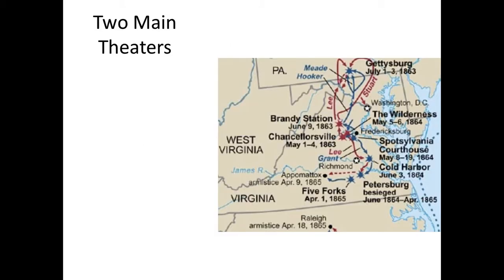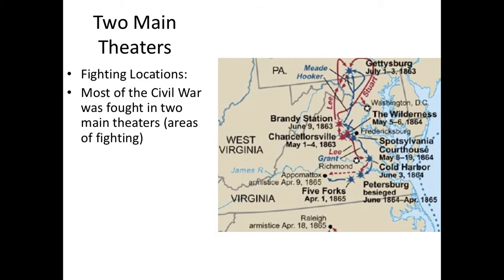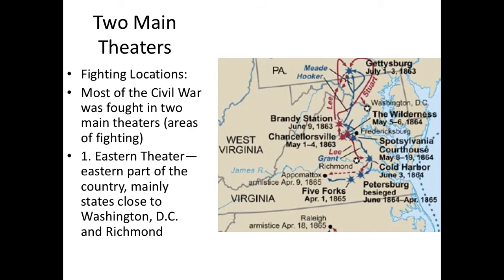First, let's talk about the two areas of fighting involved in this lecture. Most of the Civil War is going to be fought in two main theaters — a theater being basically an area in which many battles are taking place. The Civil War is mostly fought in either the Eastern Theater or the Western Theater. There is a little bit of fighting that happens out in the far west, but it won't be the most impactful; most of the impactful fighting happens in the Eastern or Western Theater.